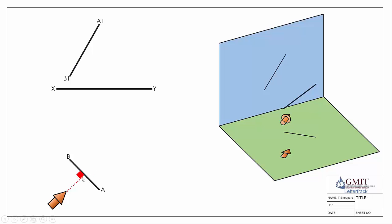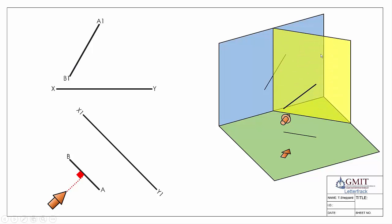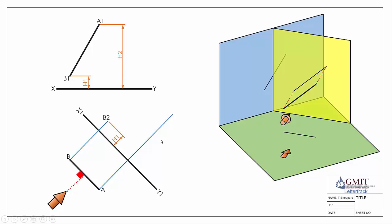From the plan view we look perpendicular to the line and create our X1Y1 — the plane parallel with the line and perpendicular to our viewing direction. We can see the plane sticking 90 degrees out of the horizontal plane. We project our line onto this plane and take heights from the front elevation, since the line hasn't changed height as we've walked around it. This gives us the true length of the line in our first auxiliary.